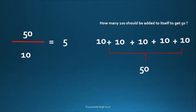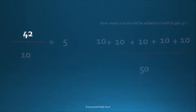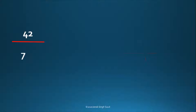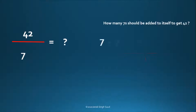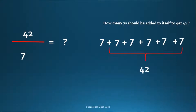Let's take one last example to understand division: 42 by 7. How many 7s are required to get a 42? It means 7 plus 7 plus 7 plus 7 plus 7 plus 7 — six 7s are required to get 42. So the answer is 6.